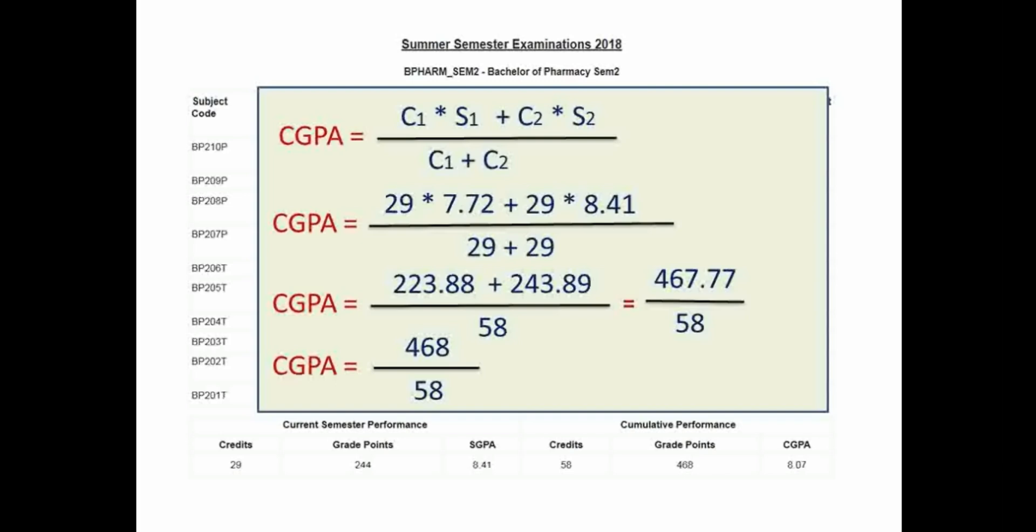Since the point value is more than 0.5, it is rounded up and it becomes 468 divided by 58. So 58 are the total credits of your cumulative result, and 468 are the grade points, that is total grade points of your result.